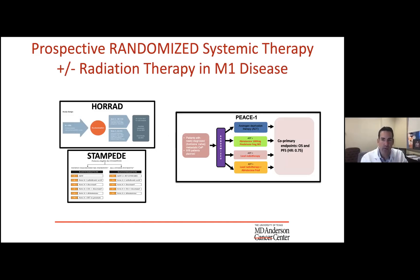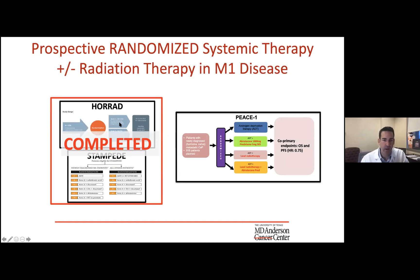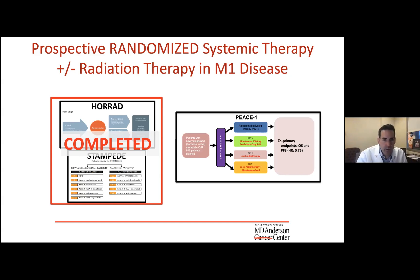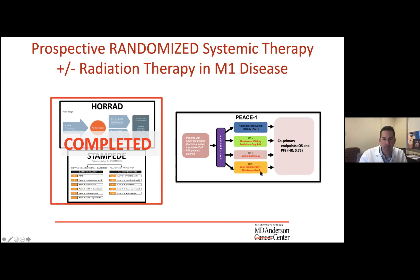There are three existing prospective randomized trials looking at newly diagnosed metastatic patients receiving systemic therapy plus or minus radiation to the primary. The HORAD trial enrolled high-volume patients (greater than 5 bone mets originally) receiving ADT alone. STAMPEDE RMH enrolled all-comers, mostly on ADT with about 16-18% receiving docetaxel. PEACE-1 has completed enrollment, randomizing patients to hormone therapy with or without abiraterone and with or without radiation to the primary — that is maturing and we'll hopefully have data soon.